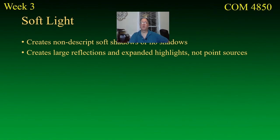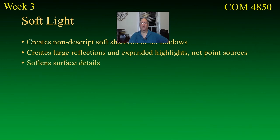Soft light creates large reflections and expanded highlights — not point sources. So you will have a gleam instead of a sharp highlight. It's larger, so it doesn't create that contrast — it's a very evenly contrasted thing. Surface details are also soft, so if you've got little cracks in your object, you're not going to see them in soft light; the soft light will sort of even them out.